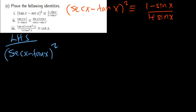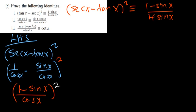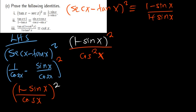Now, sec is the same as 1 over cos x, and tan is sin x over cos x. So I am going to square the expression (1/cos x − sin x/cos x). Because the denominators are the same, we add the numerators, giving us (1 − sin x) over cos x, everything squared.